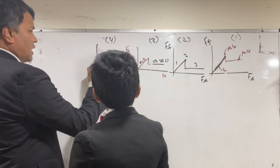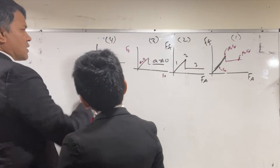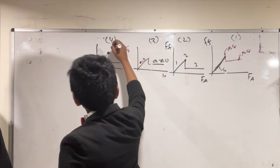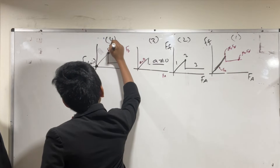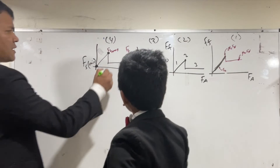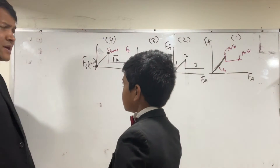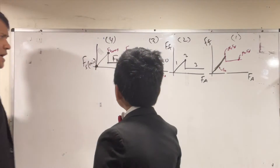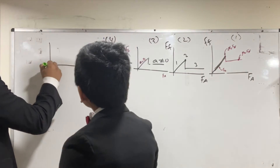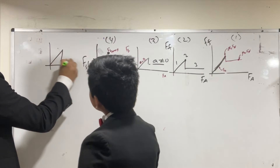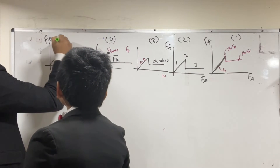We're going to call this one fs_min, we're going to call this one fs_max, and we're going to call this one fk. fk doesn't have a max or min — fk is constant. This is ff, this is fa, and this is graph number five.